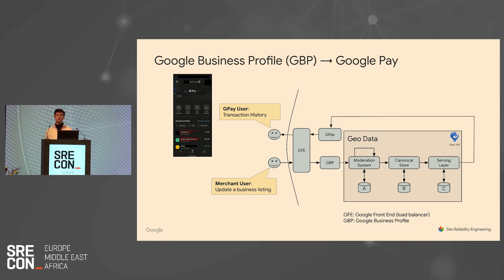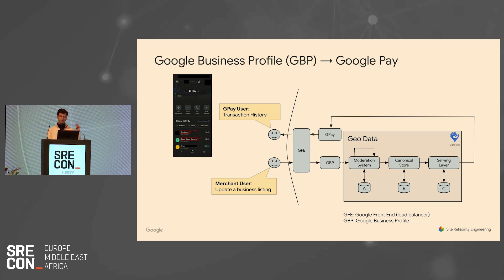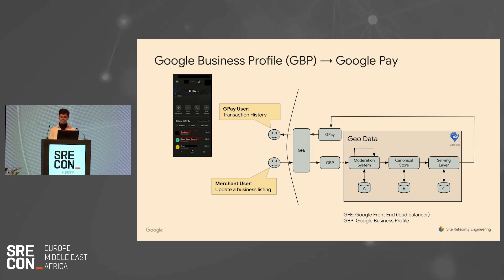The canonical storage layer's goal is really to be the source of truth — it doesn't care about serving data. What it cares about is being a repository for this data, and then it broadcasts that information to a replicated serving layer. Only at this point is data available for end users via GPay or search. This diagram is an abstraction — we have hundreds of pipelines and tons of APIs that actually power the Google Maps machine. One request from the merchant can go through ten hops before it even hits moderation.